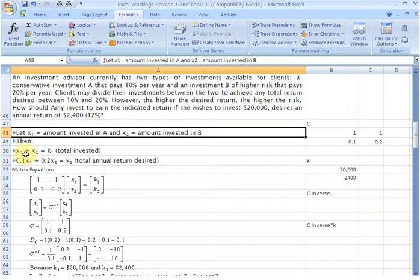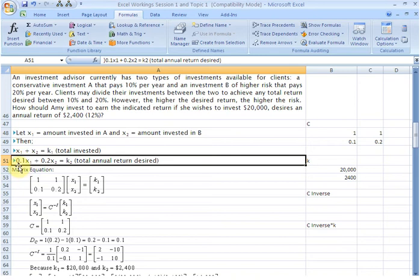The total amount invested X1 plus X2 was equal to a sum total which we gave a name K1. And then this equation talked about the return 0.1 on X1, 10% on X1, and 0.2 on X2, that is 20% on X2, would give you a certain return here which we called K2.